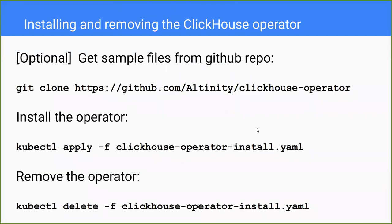Let's look at how to get the operator installed and removed. When playing around with examples, it's helpful to clone the project — we have a bunch of good sample files. There's a file called clickhouse-operator-install. You run kubectl apply on it to install, and kubectl delete to remove it. Let me jump in and show you how that works.